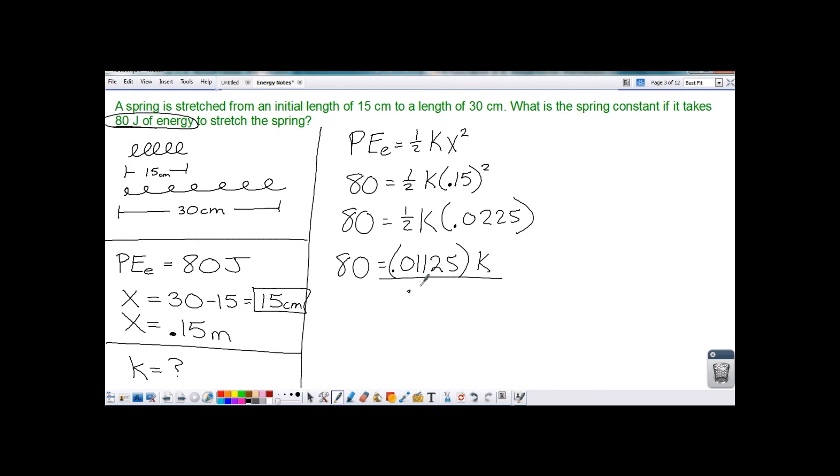Divide both sides. Our spring constant is 7,111 newtons. And our spring constant, newtons per meter, is always measured in newtons per meter. It's how many newtons it takes to stretch one meter.